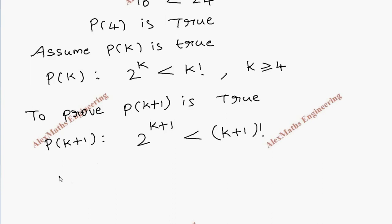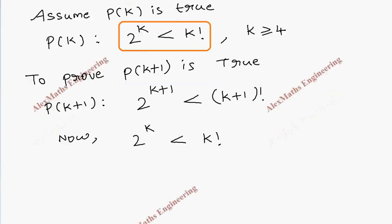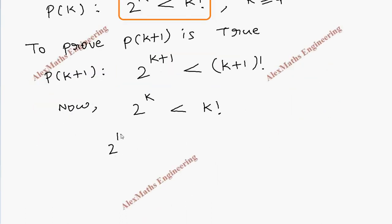For proving this, we are going to take what we already know from P(k): that is, 2^k is less than k factorial. Now we know 2^k is less than k factorial, so on both sides we are going to multiply equal value k+1.